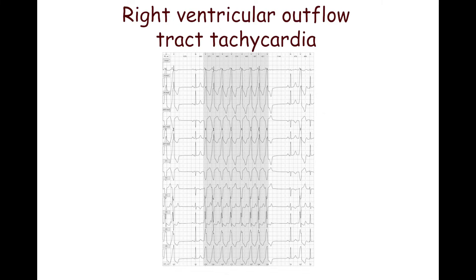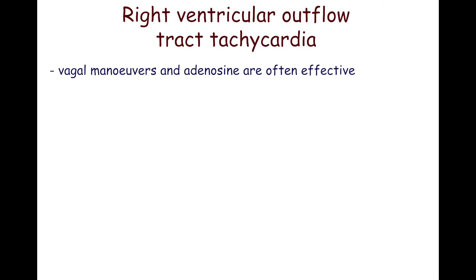Right ventricular outflow tract tachycardia may also be associated with arrhythmogenic right ventricular dysplasia. Vagal maneuvers and adenosine are often effective and may be used in patients without hemodynamic compromise. Direct current cardioversion is used in unstable patients.